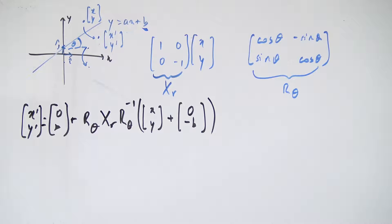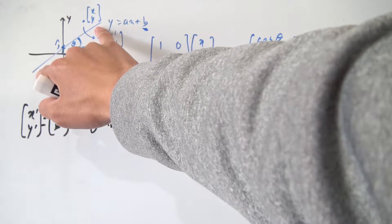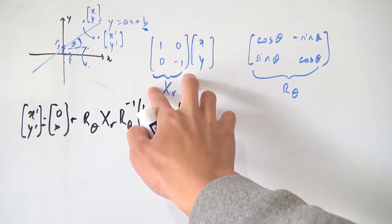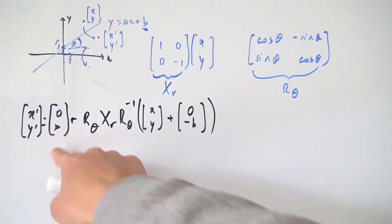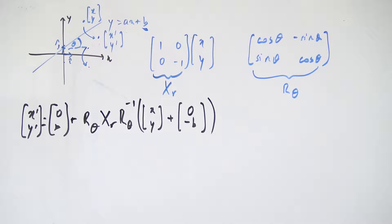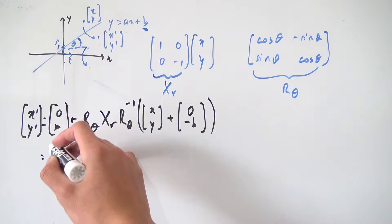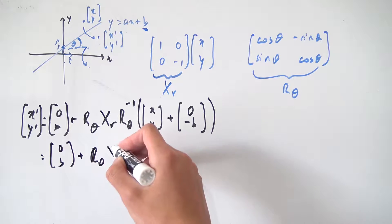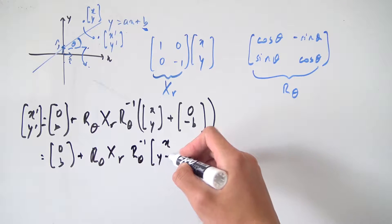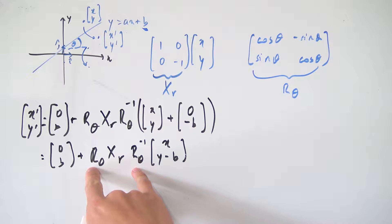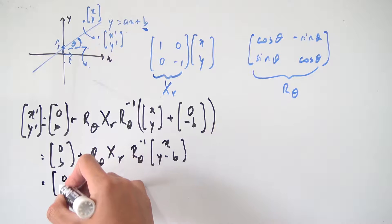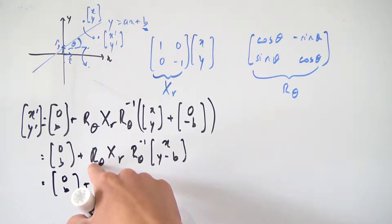That is our formula for x prime, y prime. It looks like a bit of a mess, but all it's really doing is turning this reflection line into the x axis so we can use the x-axis reflection transformation, and then undoing what we did. Now all we have to do is expand everything out. So first, we have (0, b) plus R(θ) times Xr times R(θ)-inverse applied to the vector (x, y - b). Now let's plug in the definitions for R(θ), Xr, and R(θ)-inverse.